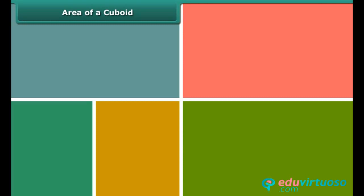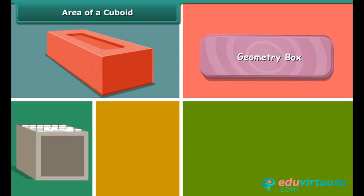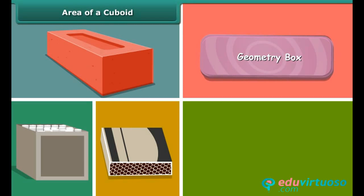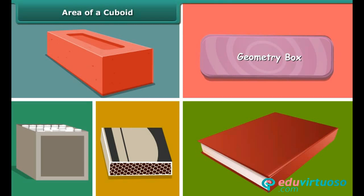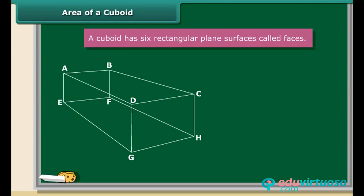Just guess the shape of a brick, chop box, geometrical box, matchbox and a book. That's right — these are all examples of cuboids. A cuboid has 6 rectangular plane surfaces called faces.